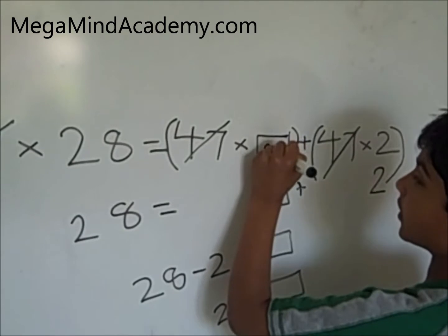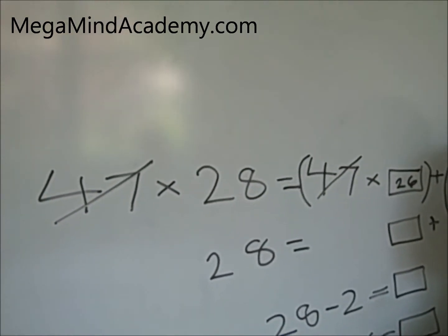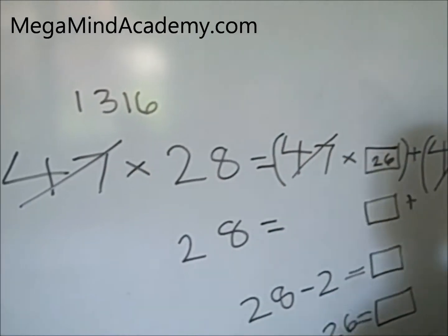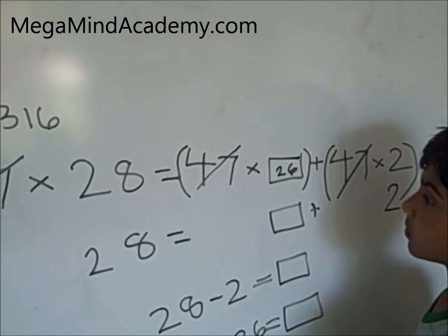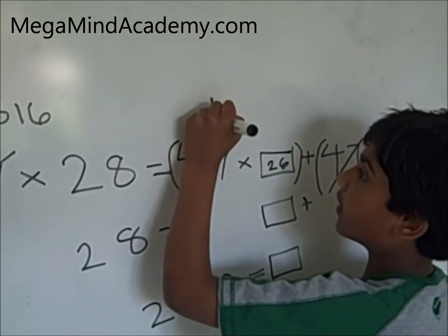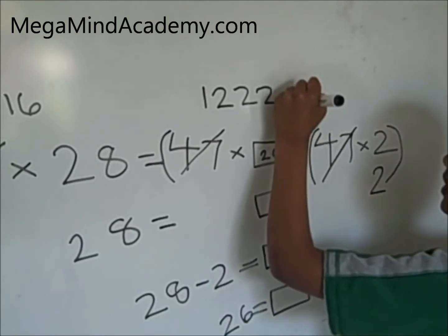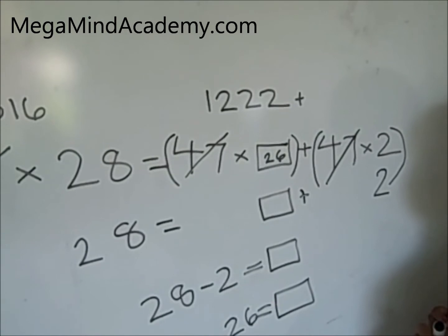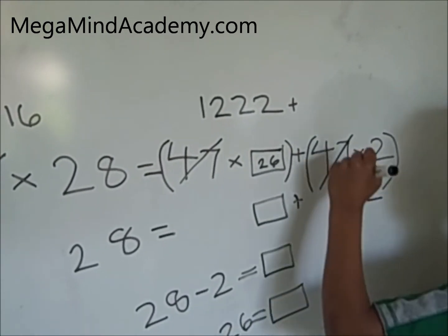Now let's check our answer. 47 times 28 equals 1,316. 47 times 26 equals 1,222. Plus 47 times 2 equals 94.